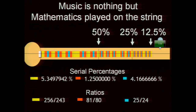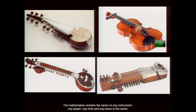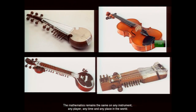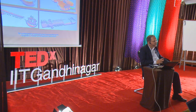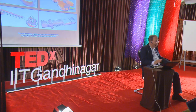Music is nothing but mathematics played on the string. On a single string you can play all three octaves: one between 100% and 50%, the next compressed between 50% and 25%, and the third between 25% and 12.5%. No wonder Galileo Galilei said God has written the book of nature in the language of mathematics — and the wonder is, the mathematics remains the same on any instrument, with any player, any time and any place in the world.